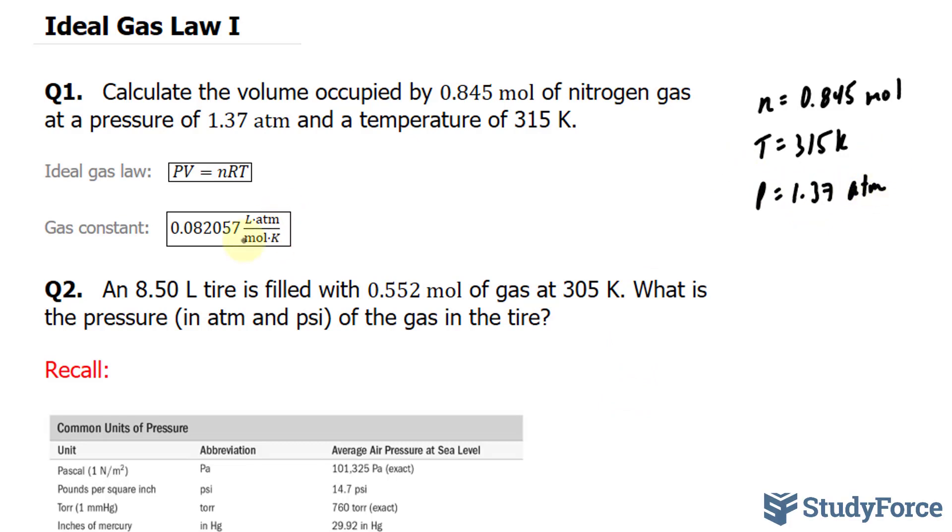Also, we're told the gas constant and it's written right here. All we have to do is substitute these numbers into this formula. Where P is 1.37 times V, which is what we're looking for, and it's stated right here.